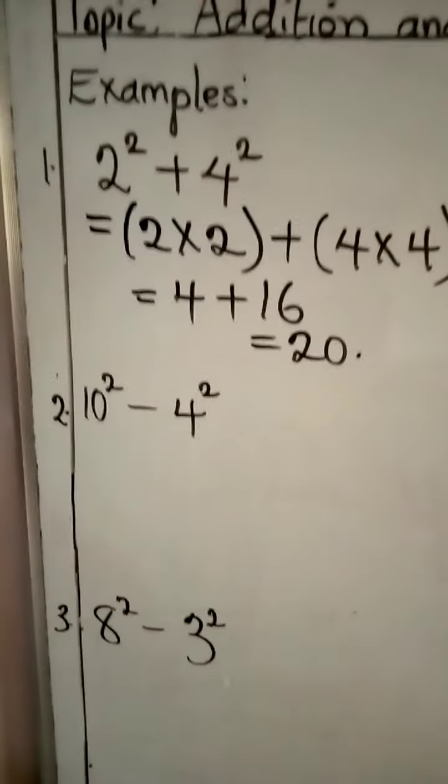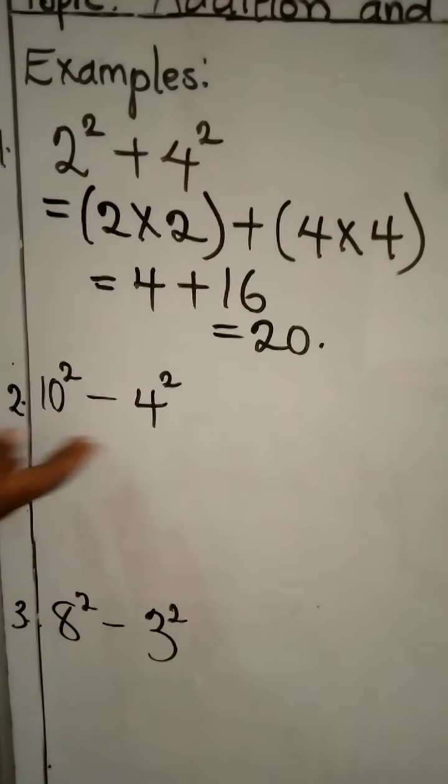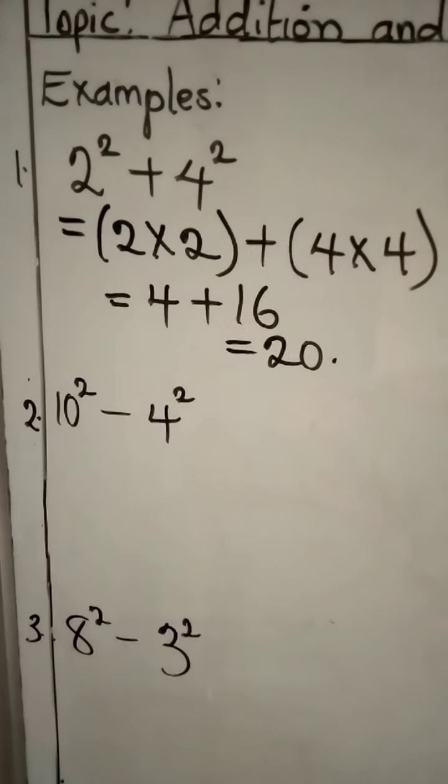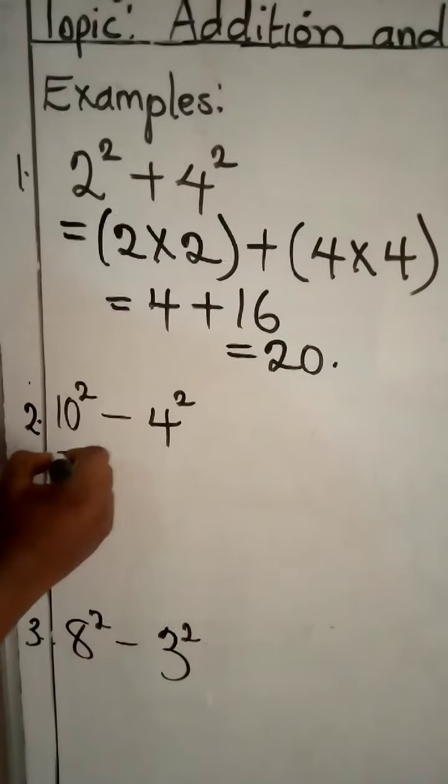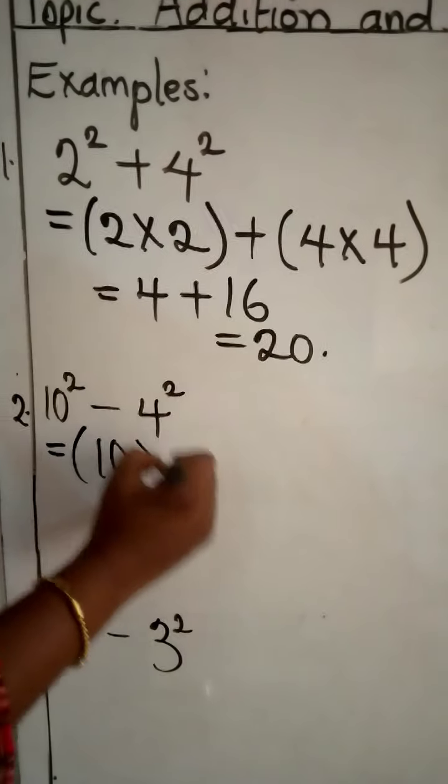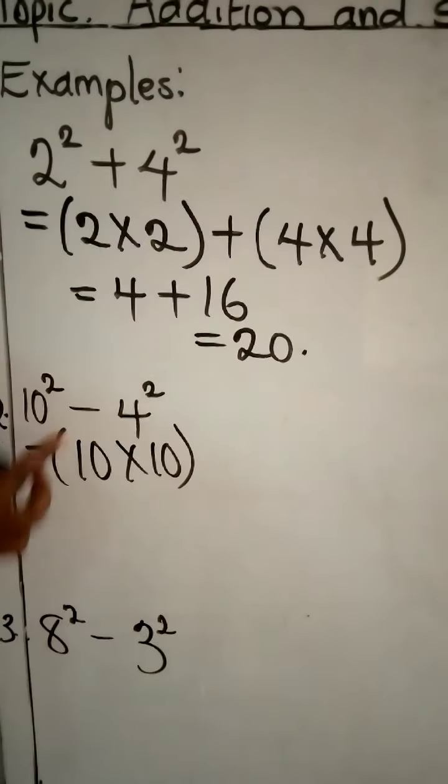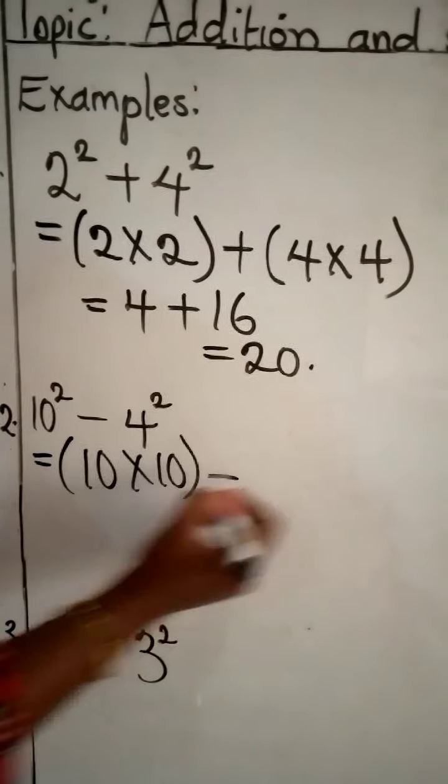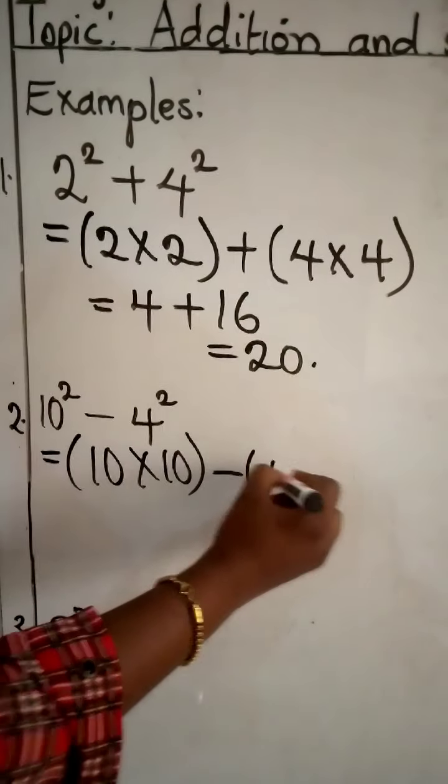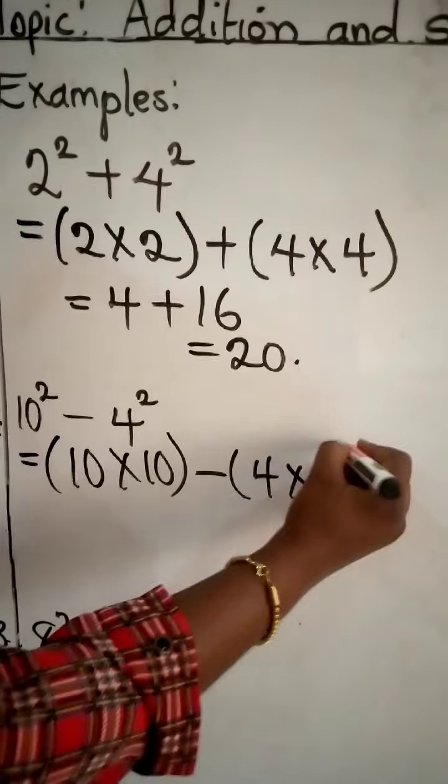The square of 10 and that of 4. So you have to subtract this. Let's do this together. Expand. Which is 10 times 10. And then your sign. And then this one, which is 4 times 4.